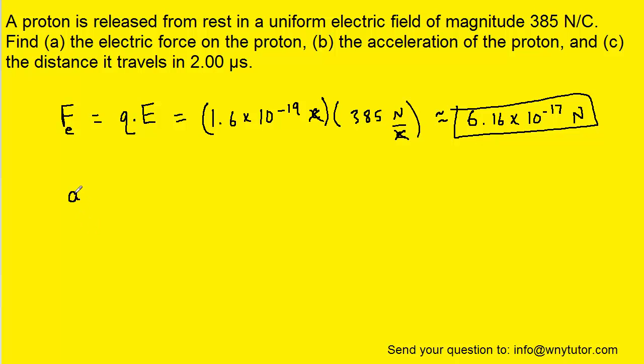For part B, we know that the acceleration of an object is equal to the net force acting on it, divided by the mass of the object. We assume that the only force that's causing acceleration on the proton is the electric force that we just calculated. The mass of a proton is a known value.